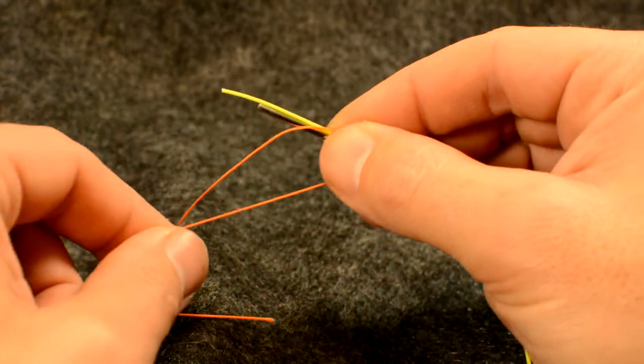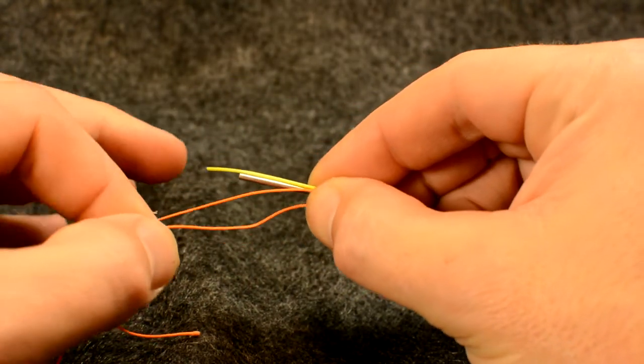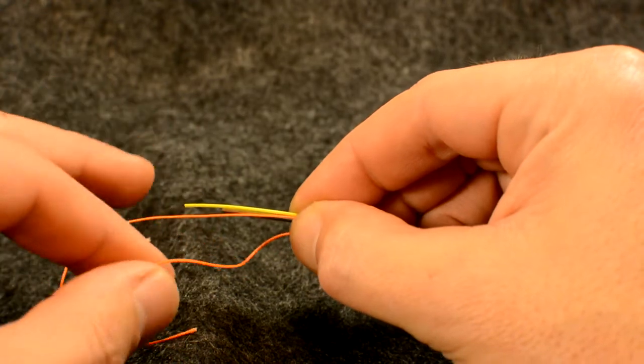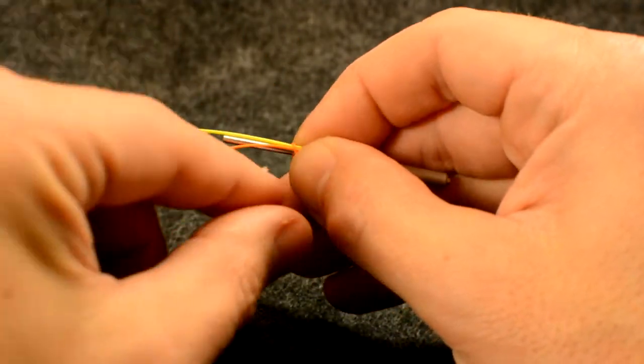Grasp the tag end of the backing and wrap over the fly line and backing towards the front of the tube with five complete turns.